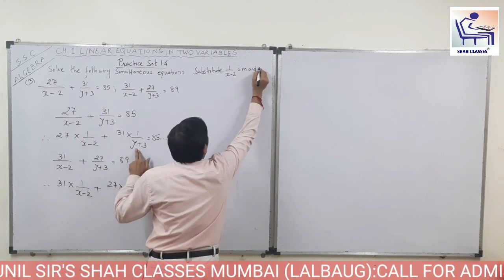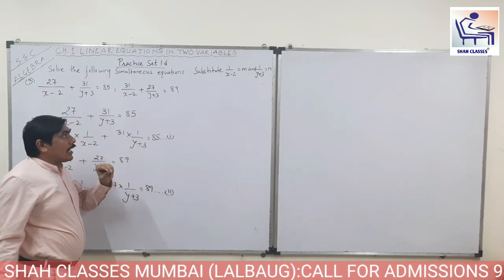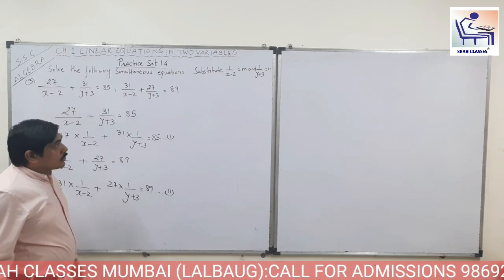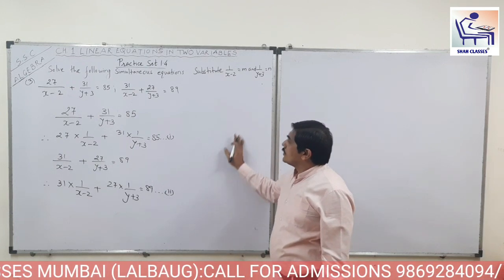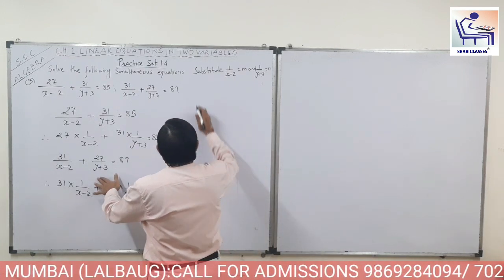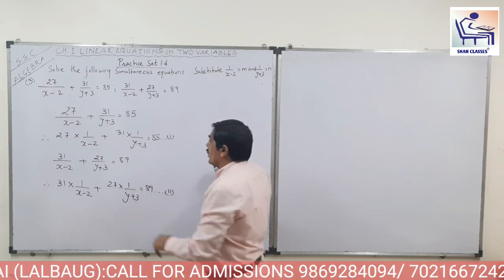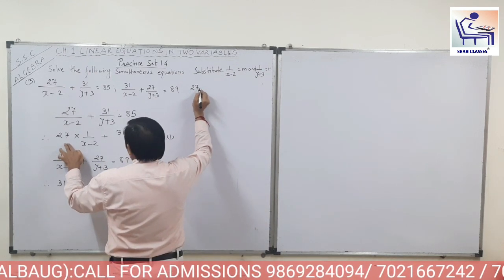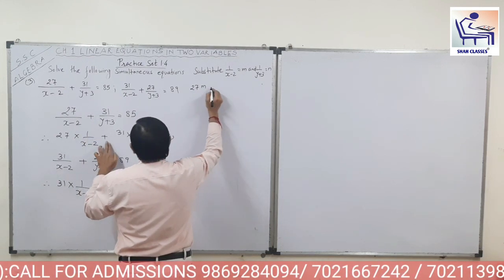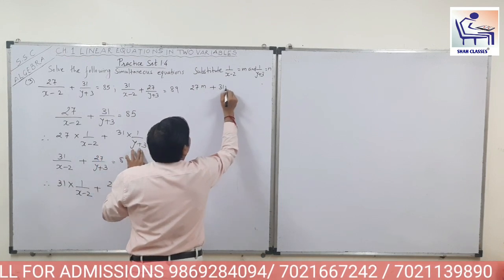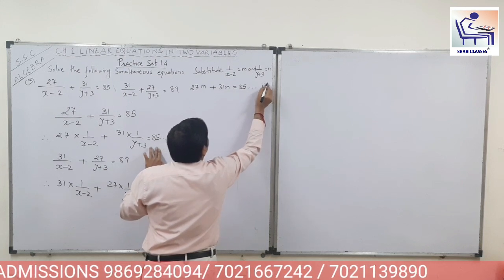And 1 upon (y plus 3) is equal to N. I want to clarify — you can take any variables except x and y. I have taken M and N here; you can take a and b or any other variable that is easier for you. From the first equation we get the third equation: 27M plus 31N is equal to 85. This is equation number 3.